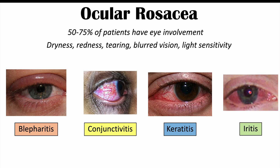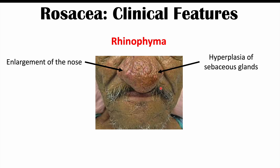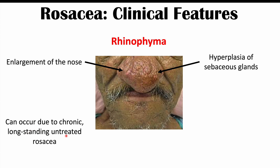The last important clinical finding is rhinophyma — an enlargement of the nose. We can also see hyperplasia of the sebaceous glands in the nose, which contributes to the nose's size. Rhinophyma is due to chronic, long-standing, untreated rosacea, occurring after rosacea has gone untreated effectively. It almost always occurs in male patients and is rare in female patients.